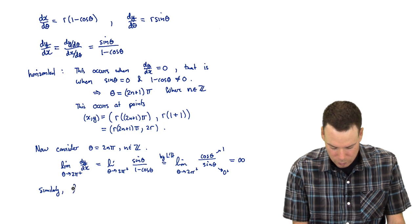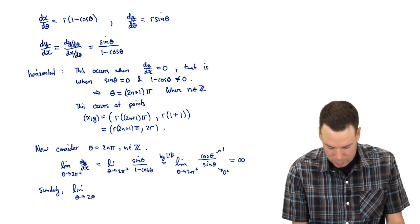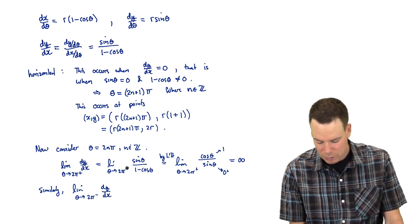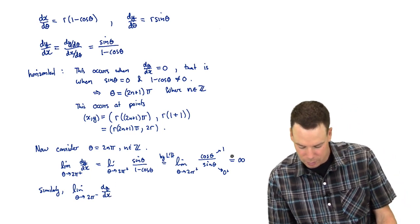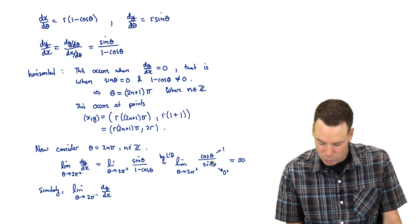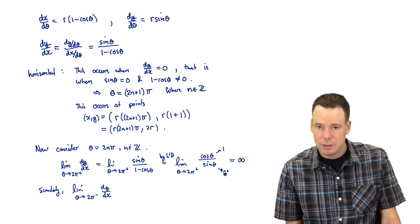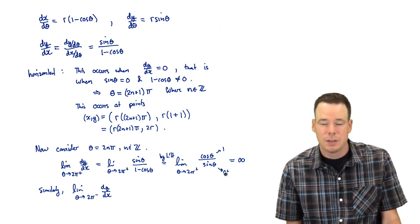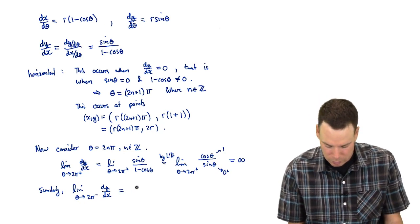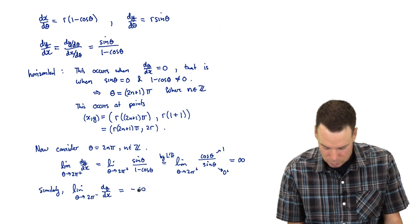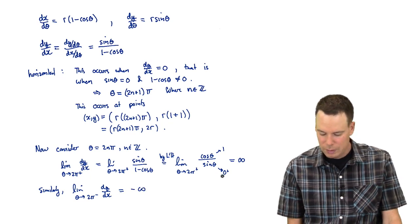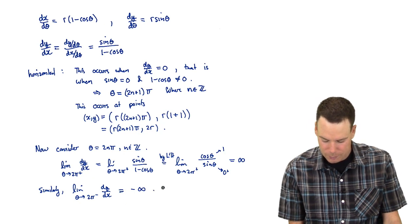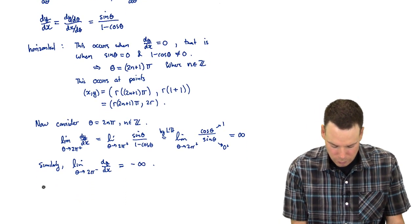Similarly, if we look at the limit as theta goes to 2pi from the left of dy by dx, pretty much everything holds except that last little argument. Cos theta still goes to 1. Sine theta goes to 0. But now theta is slightly smaller than 2pi. So sine theta is going to 0 through negative values. So the ratio is going to something like 1 over negative 0. So that's blowing up. That's going to negative infinity.